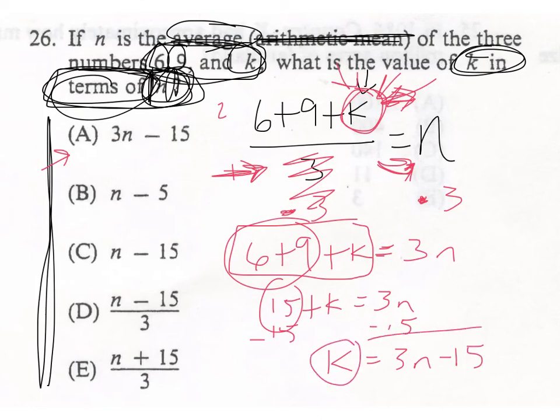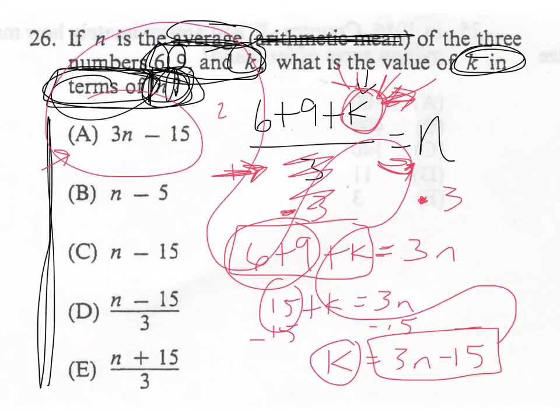k equals three n minus 15. It's k by itself, all day, every day. And then, we just see if our answer is there. And you've got your answers, ladies and gentlemen. There's only one more thing you need to do. And that's watch the end of this video.